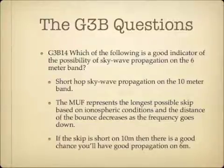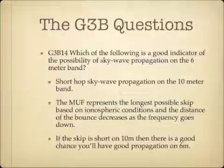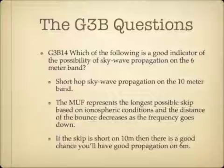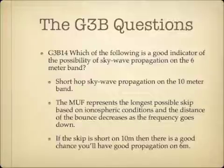Which of the following is a good indicator of the possibility of skywave propagation on the 6-meter band? The answer is short-skip skywave propagation on the 10-meter band. The MUF represents the longest possible skip based on ionospheric conditions, and the distance of the bounce decreases as the frequency goes down. If you're getting a lower frequency from the MUF, your skip is essentially shorter. So if the skip is short on 10 meters, there's a good chance you'll have good propagation on 6 meters.